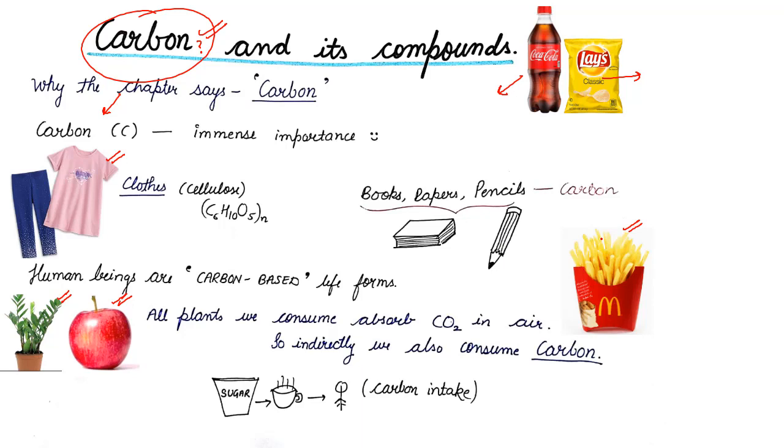Like, if you take any of the compound around you, all of them, many of them will be made up of carbon. Like, for example, let me say clothes. They are specifically made up of cellulose. I am writing here the formula of cellulose, which you don't have to remember, but see, this is a compound which contains carbon. The books you might be using in case you study, the papers on which you write letters or let's say some notes, the pencils, whatever you use, all of them are made up of carbon.